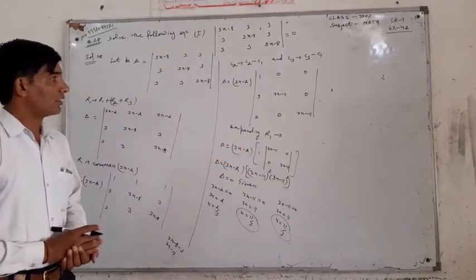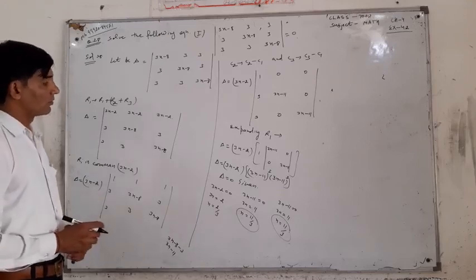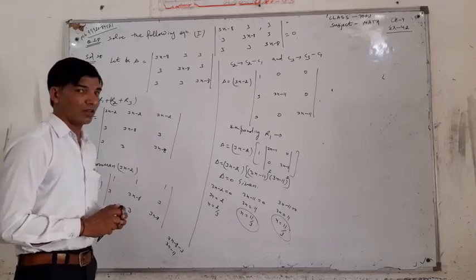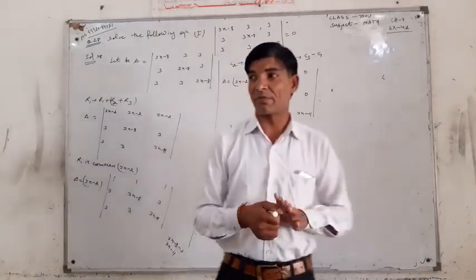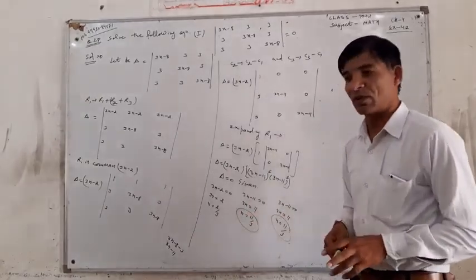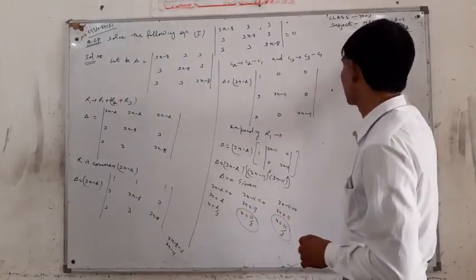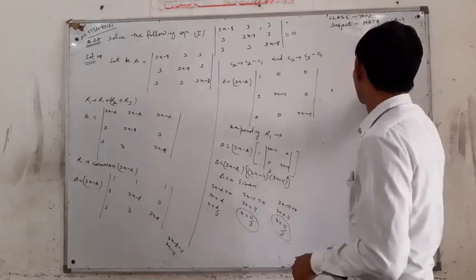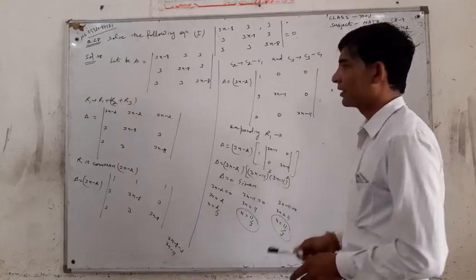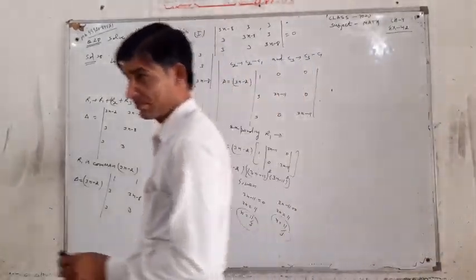All right. We have the answer, and this is x. We have chapter 4.4 to 1. Exercise 4.2 is complete. Okay, so we are going to complete the exam. 4.2 exercise is complete. Okay. Thank you.